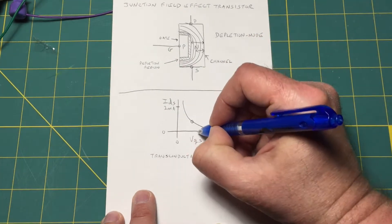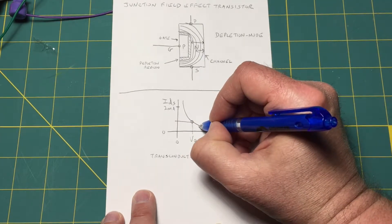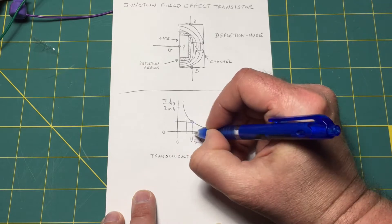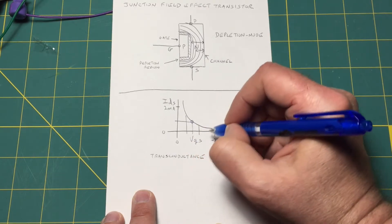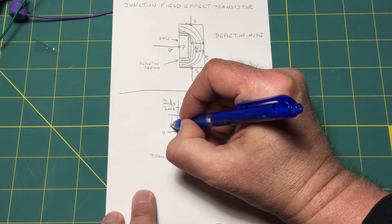So if we have some operating point on this curve and we were to vary this gate-to-source voltage we would see a corresponding change in the drain current here.